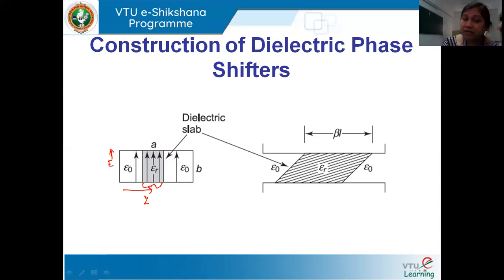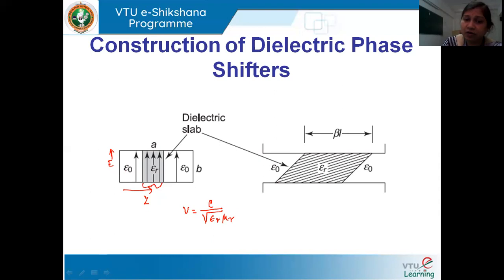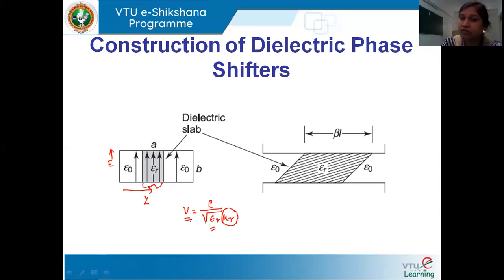When the wave is propagating through different media, the velocity of the wave is going to change. For an electromagnetic wave propagating through vacuum, it propagates with the velocity of light. When it goes through any medium, the velocity equals c divided by √(εr × μr), where εr is the relative permittivity and μr is the relative permeability of the medium. Since we are considering only the electric field, we consider only εr. Since εr changes when the medium changes, the velocity of propagation also changes.